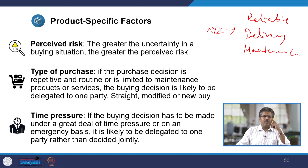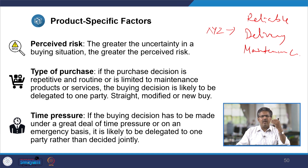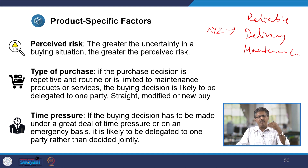The second product-specific factor is the type of purchase. If the purchase decision is repetitive — just routine maintenance work — the buying decision is likely to be delegated to one party because you do not need to spend too much time and energy on that. The kind of purchase being made is very important: whether it is a straight buy (repeat buy), a modified buy with some minor changes, or a completely new buy where you are buying a new product entirely. All three types of purchases will have an effect on whether the decision is joint or autonomous.